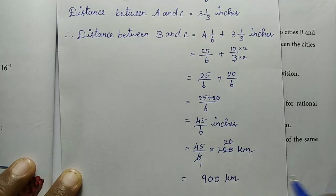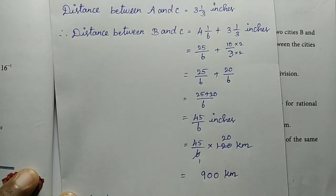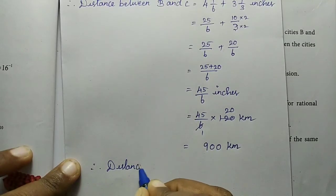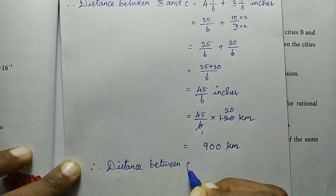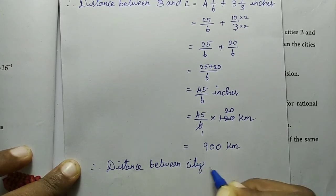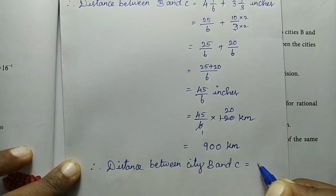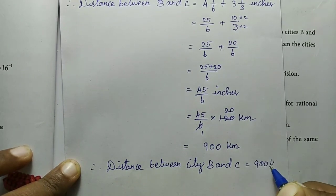900 kilometers. So the distance between city B and C is equal to 900 kilometers.